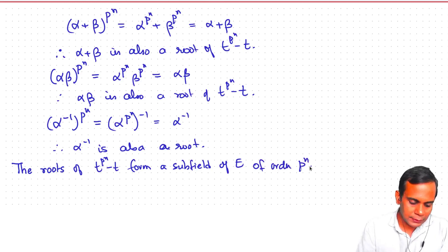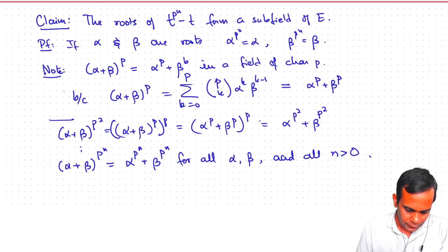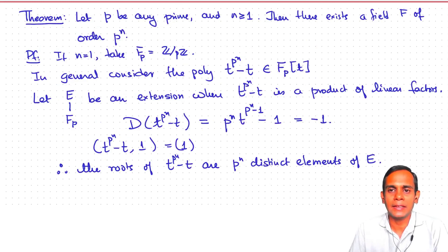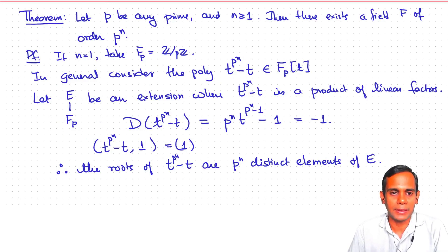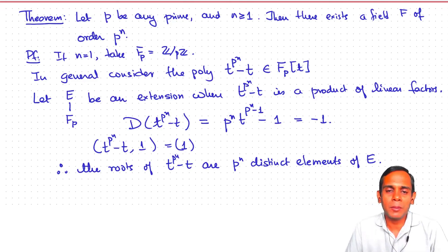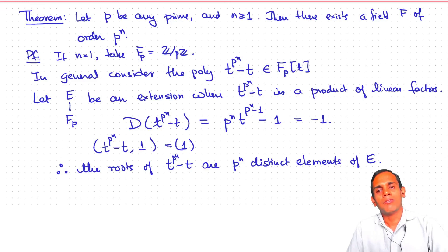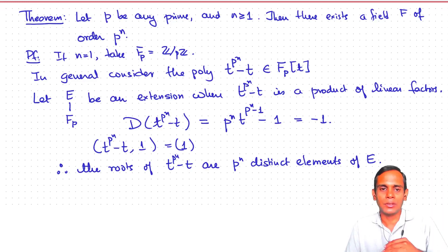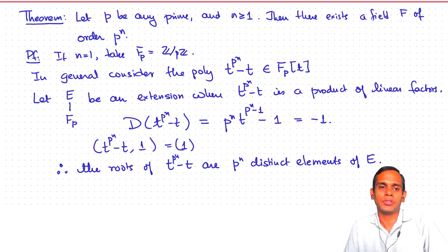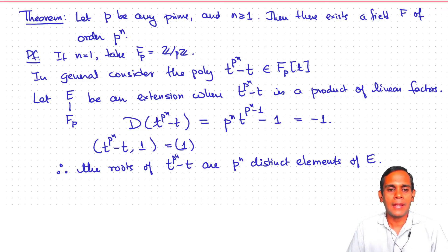The conclusion is that for any prime p and any integer n ≥ 1, there exists a field F of order p^n. You start with Fp, take the polynomial t^(p^n) − t, find a field in which it factorizes into linear factors, and look at the subfield consisting of its roots. That subfield is a field of order p^n.